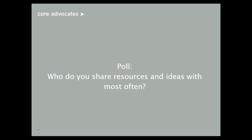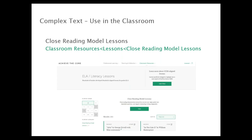So you've built your knowledge, you've shared with others — now it's time to try it. Or the other way around: sometimes you want to try it in your classroom first and then come back together as a group. One of the resources on Achieve the Core to support this use of complex text and scaffolding is our close reading model lessons. We recommend them because they have grade-appropriate complex text that's been selected, text-dependent questions, and academic vocabulary. You can use them knowing the material is of high quality and focus on the instruction — thinking about how to scaffold for students who may need additional support.